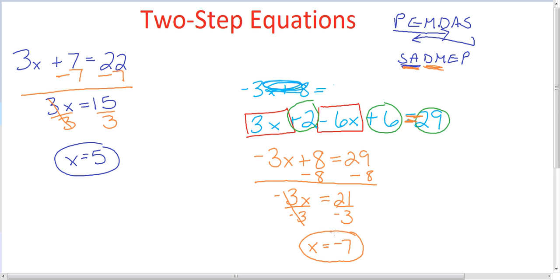You can always double check your work by going back to the original problem and plugging in your answer. So we can go back up here and say 3 times negative 7 plus 2 minus 6 times negative 7 plus 6. So this gives us negative 21 plus 2 minus a negative 42, which is a plus 42 plus 6.